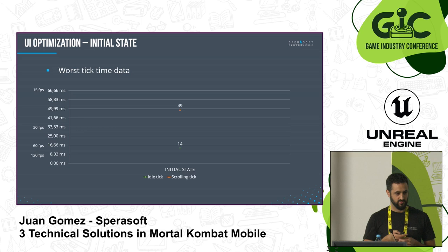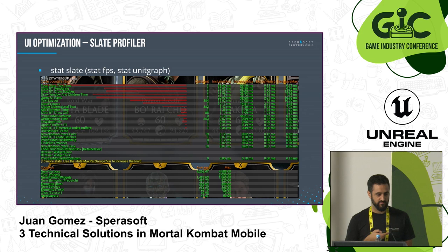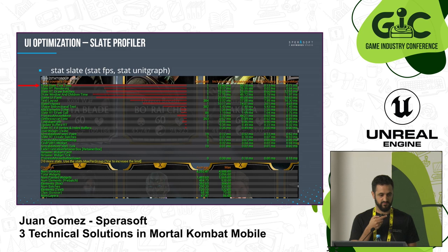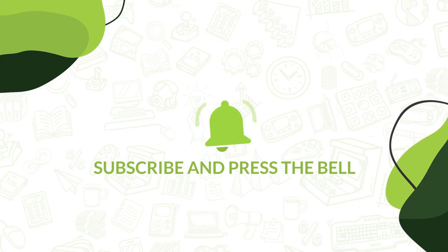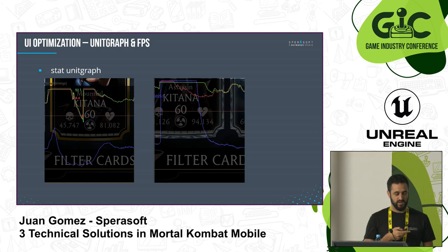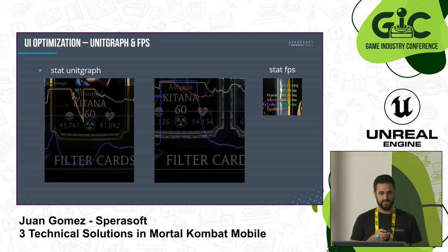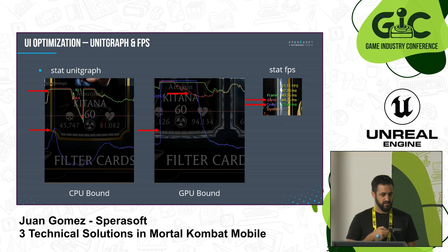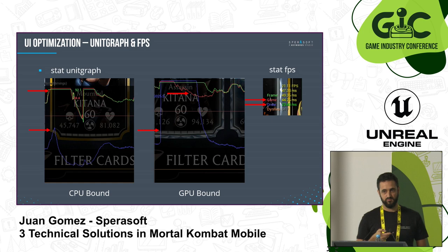The first thing is to talk about the tools we have. If you want to debug or profile UI in Unreal, you want to use StatSlate. It shows interesting things like total tick time, rendering tick time, the amount of widgets on screen, how many draw calls you're doing, and so on. In combination with UnitGraph — which is kind of the same as stat FPS — it tells you what your bottleneck is. The blue line is the rendering tick and the red line is the game tick. If the red line is above the blue line, we are CPU bound; otherwise we are GPU bound. Looking at it quickly, our problem is CPU — mostly it always is for UI.